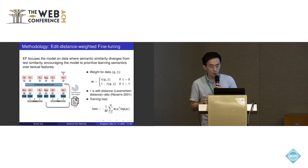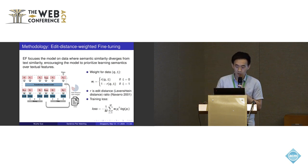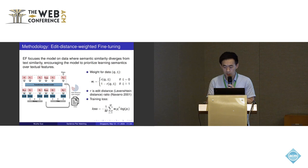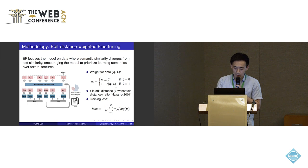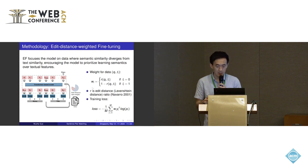That's why we proposed the edit distance weighted fine-tuning. This fine-tuning focuses the model on data where semantic similarity diverges from textual similarity. It encourages the model to prioritize learning semantics over textual features. For sentence pairs with dissimilarity, the more similar the textual features, the more attention the model should pay to them. For sentence pairs with similar meanings, the rule is opposite. And the weight can be added to the training loss to make the model prioritize learning semantics.